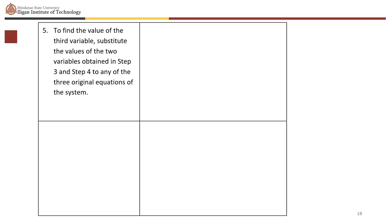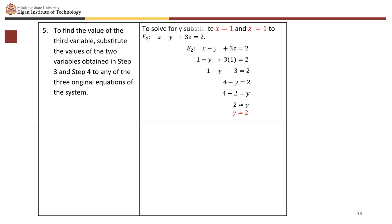To find the third variable y, substitute x equals 1 and z equals 1 into e sub 2 (x minus y plus 3z equals 2). We get 1 minus y plus 3 times 1 equals 2, so 1 minus y plus 3 equals 2. Solving for y, we get y equals 2.